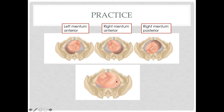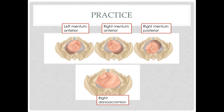Finally, we have right mentum posterior since the chin in this picture is pointing posteriorly towards the right. In the next picture, we have a fetus in a transverse lie with the scapula presenting — shoulder presentation — so the marker is the acromion. This is right dorsal acromion.